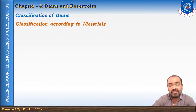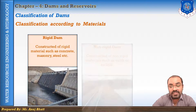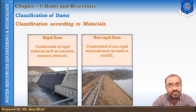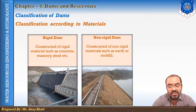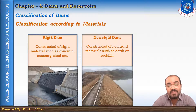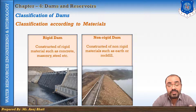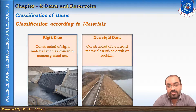The classification according to material: Rigid dams are constructed of rigid materials such as concrete, masonry, steel, or timber. These dams deflect and deform very little when subjected to water pressure or any other pressure. Examples include concrete gravity dams, steel dams, and arch dams. Non-rigid dams are constructed of non-rigid materials such as earth or rock fill, and relatively large settlement and deformation are possible in non-rigid dams.